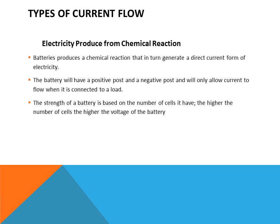Electricity can be produced from chemical reactions. Batteries produce a chemical reaction that generates direct current. The chemicals inside connect to the plates, and when a load and conductors are connected to the battery, current flows to the load. Batteries have a positive pole and a negative pole and only allow current to flow when a load is connected. The strength of the battery is based on the number of cells; the higher the number of cells, the higher the voltage.